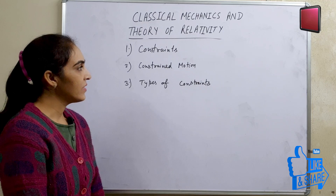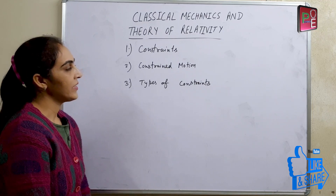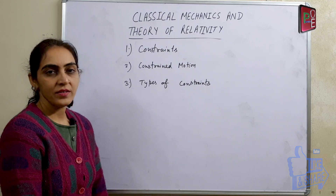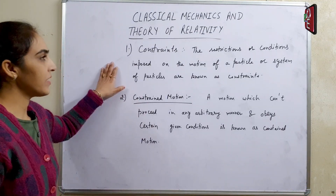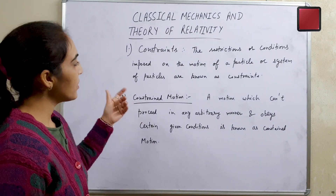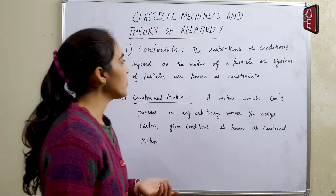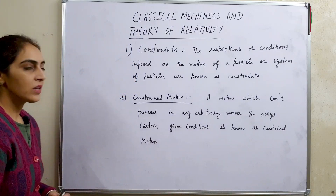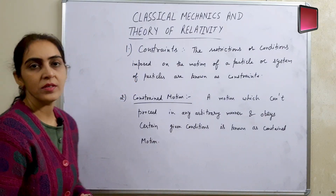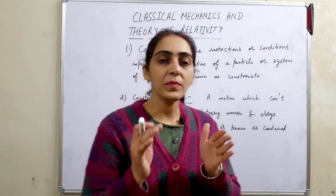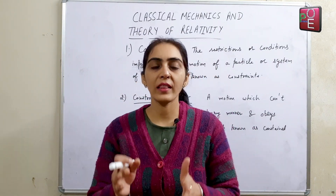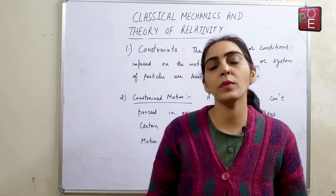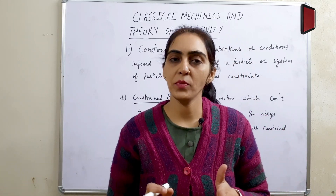The topics are constraints, constraint motion, and types of constraints. So let's begin with constraints. Constraints are the restrictions or conditions imposed on the motion of a particle or a system of particles. When we put restrictions or conditions on the motion of a particle or system of particles, we call them constraints.